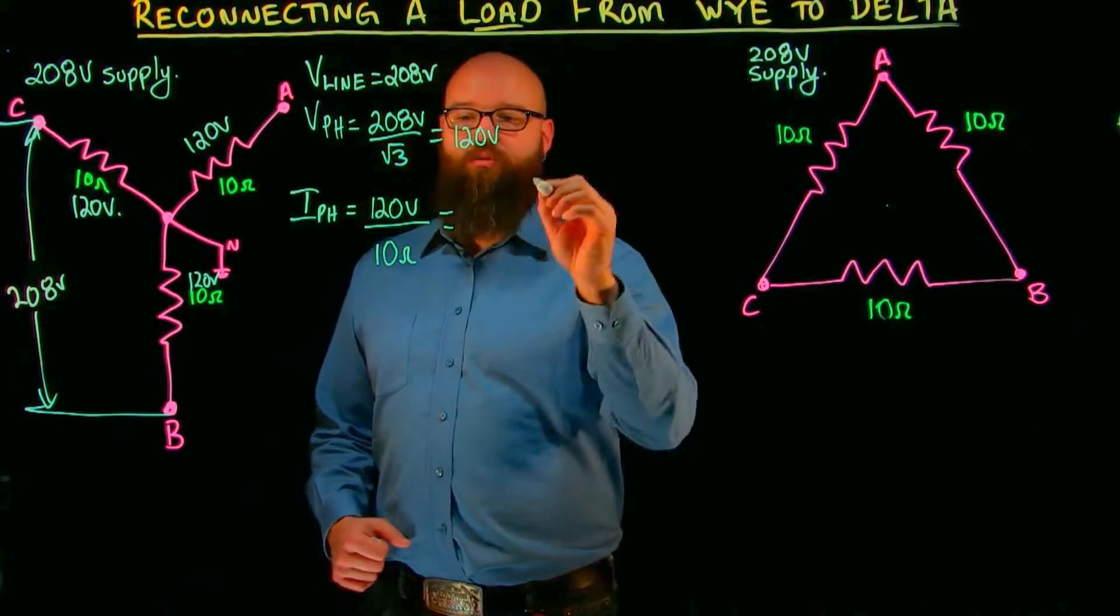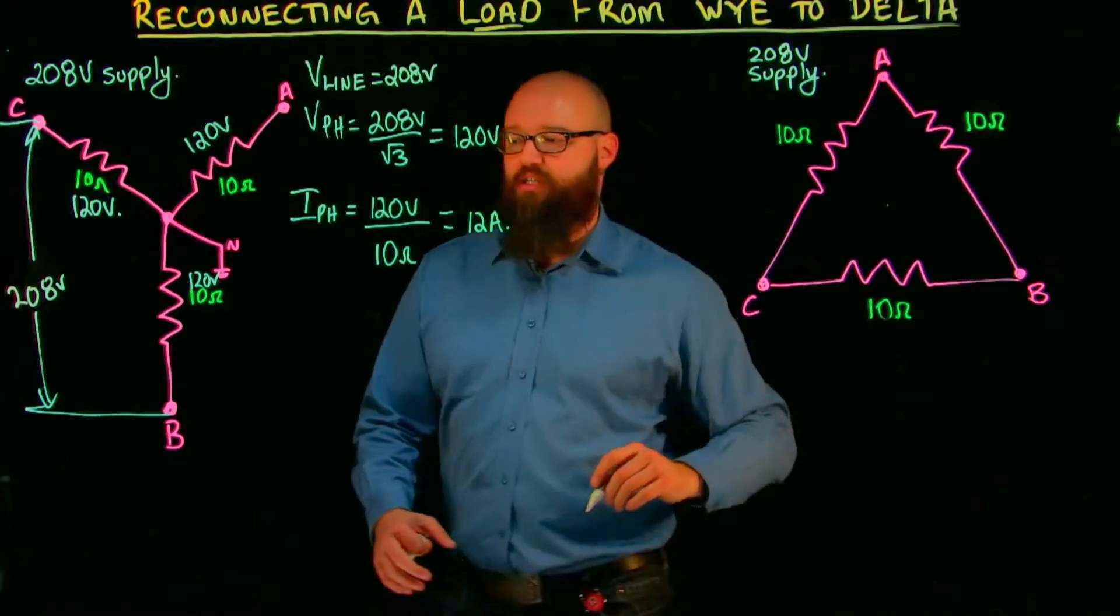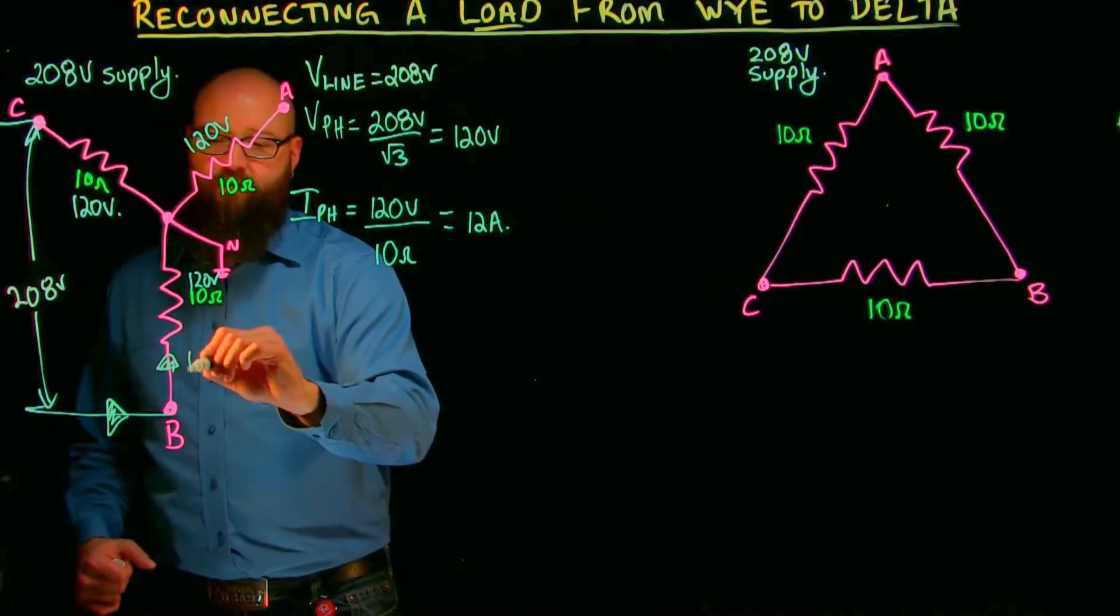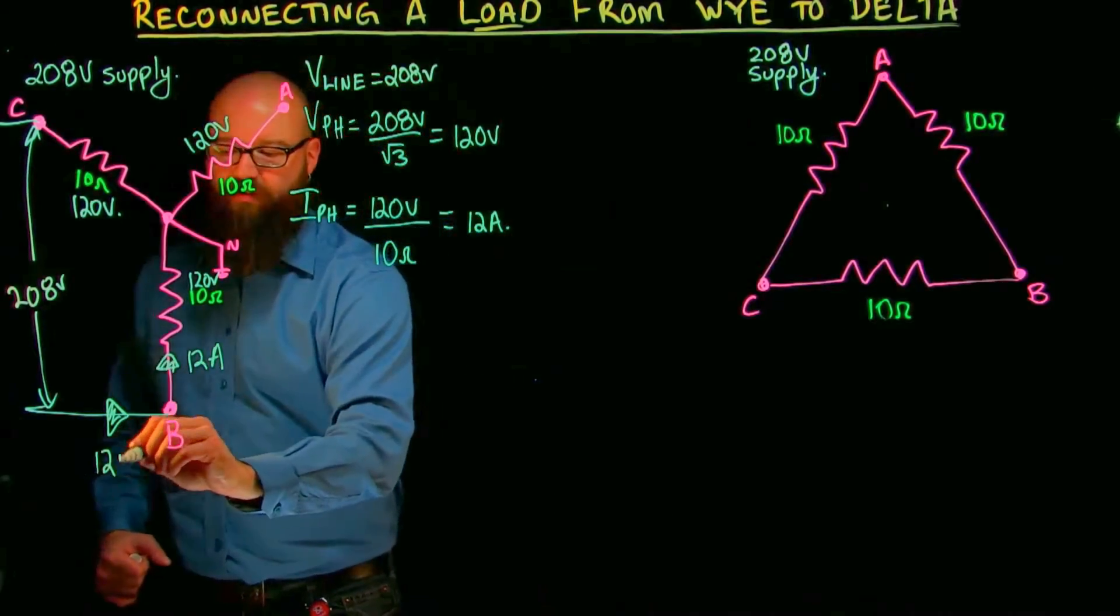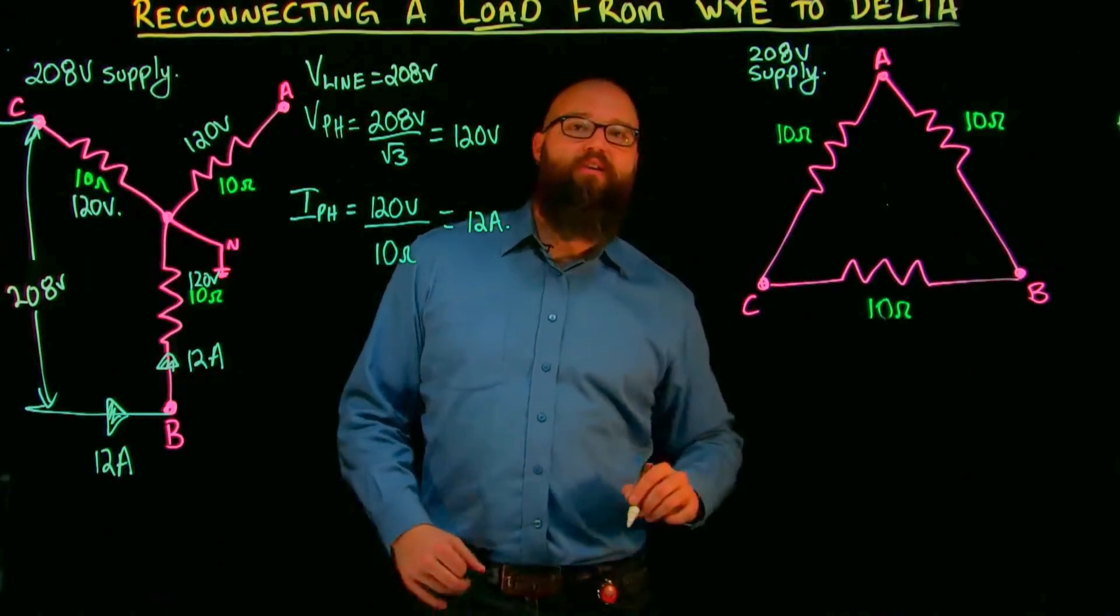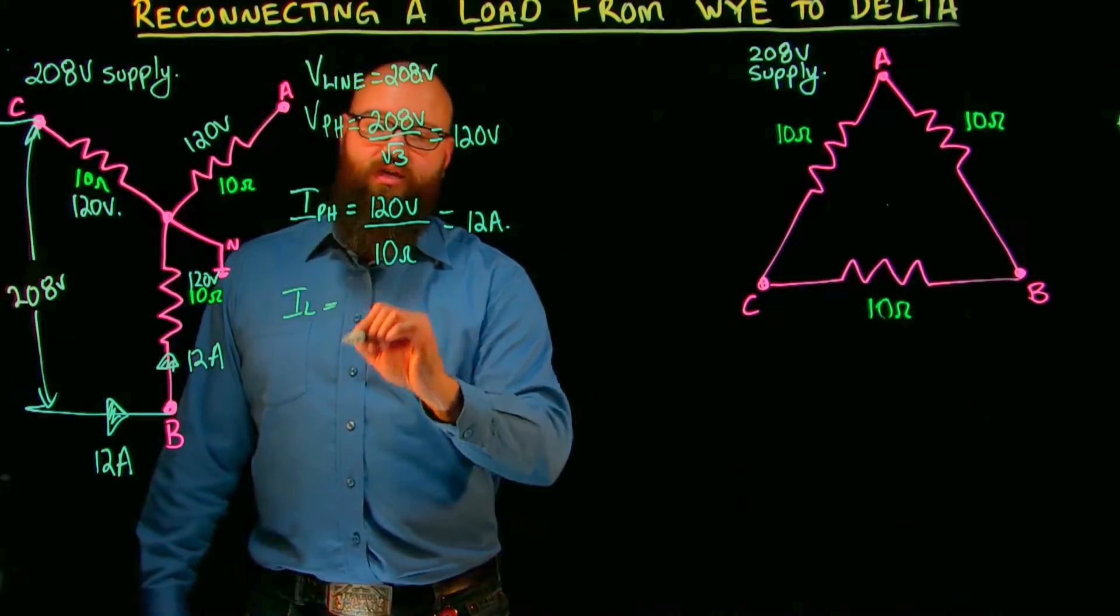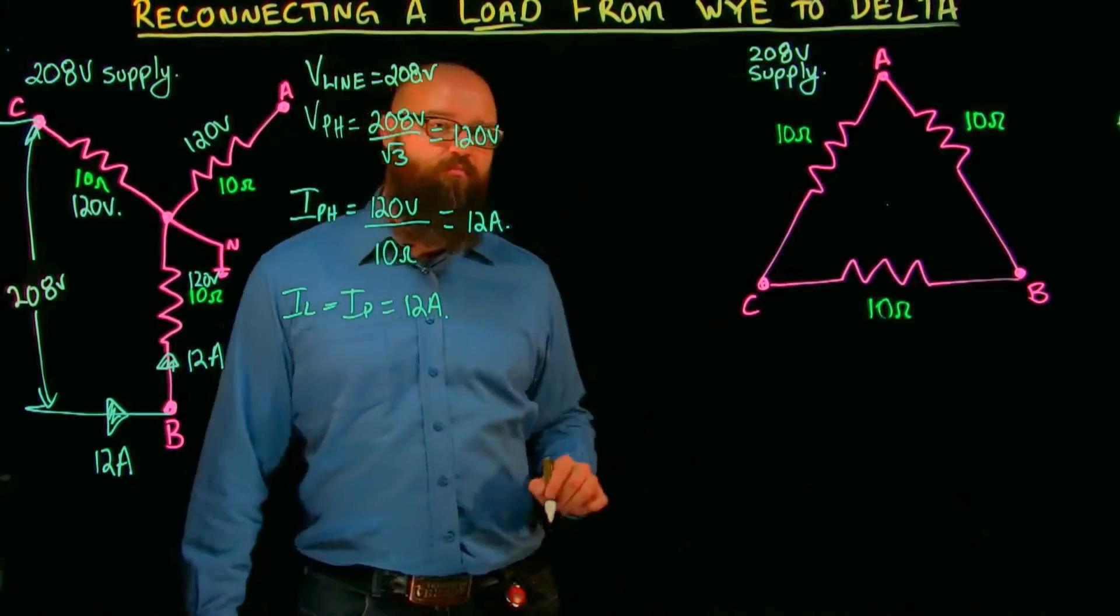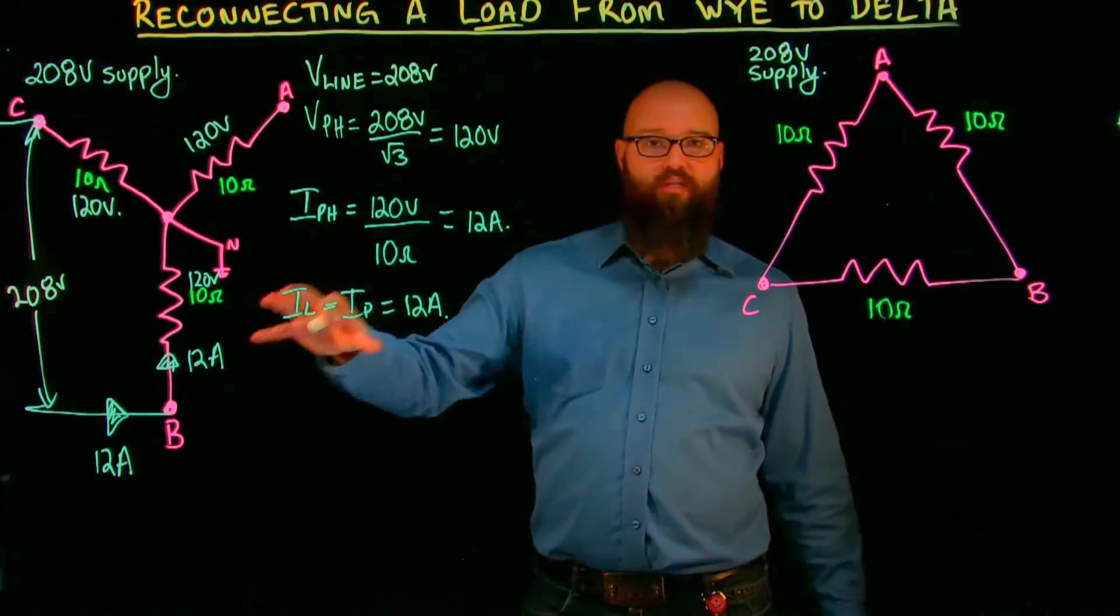Now Y connected circuits, if I have 12 amps on this phase, that also means that I have 12 amps on that line. There's nowhere else for it to split off. My line current is equal to my phase current, so we can say I line equals I phase equals 12 amps. So last thing we're going to do is calculate the power dissipated by this Y connected load.